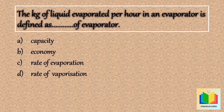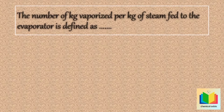The answer is option D, rate of vaporization. The number of kilogram vaporized per kilogram of steam fed to the evaporator is defined as: